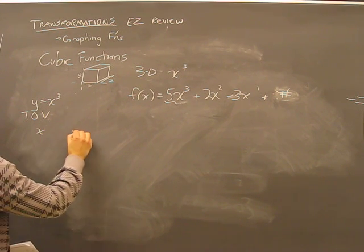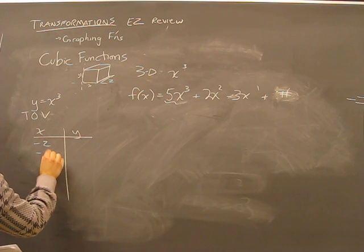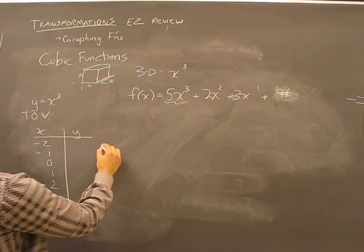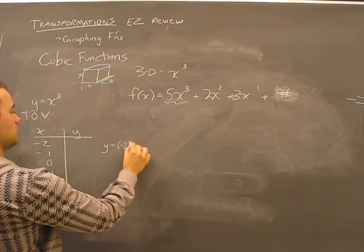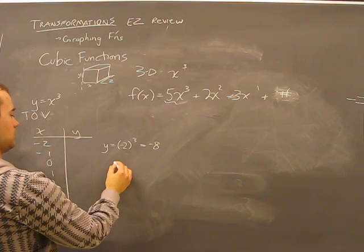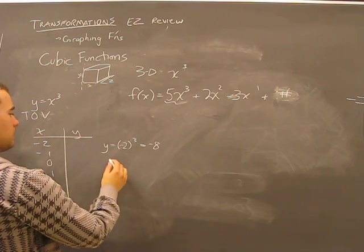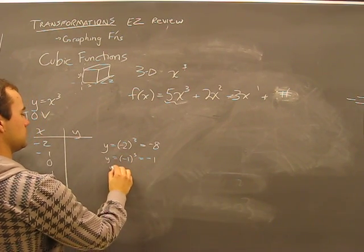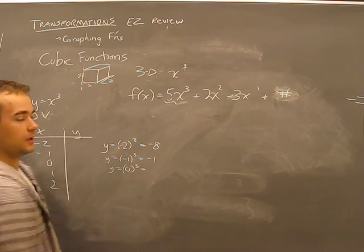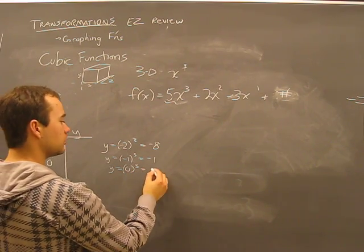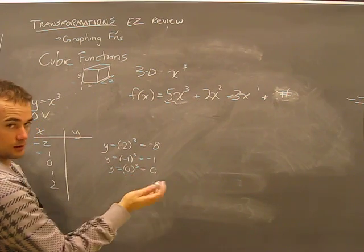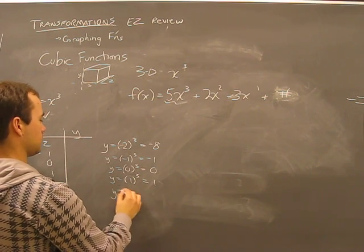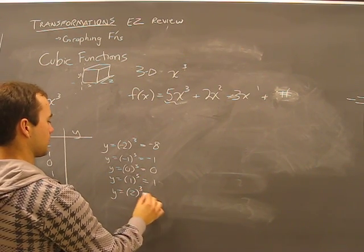Here's our table. Same thing. Well, that means y equals negative 2, cubed plus negative 8. Y equals negative 1, that's negative 1. 0 cubed. 0 cubed is not 1, 0 cubed is 0. Because the exponent's not 0, right? 0 cubed is 0.